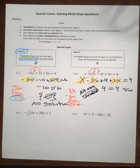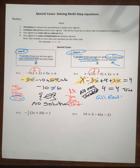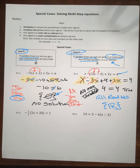So these are special cases. When the variable drops out and you get a true statement, that means it's going to be all real numbers — the identity. Our final answer is all real numbers, or you can write the fancy R. So when the variable drops out and you get a false sentence, that means no solution. When the variable drops out and you get a true statement, that means all real numbers.